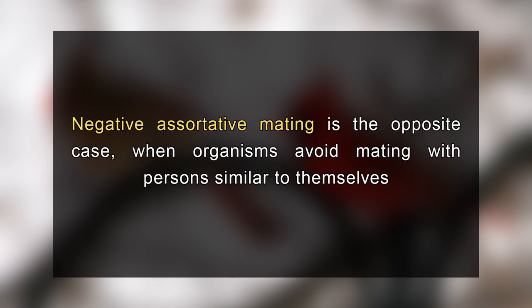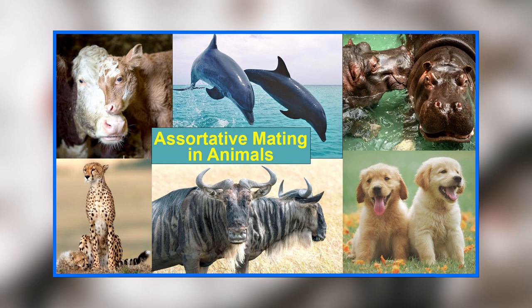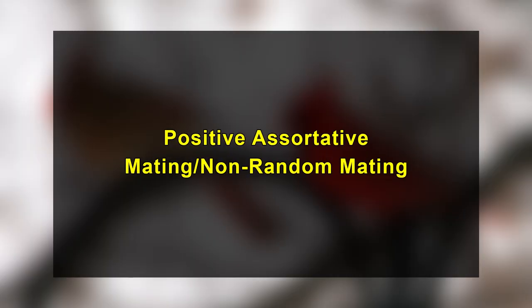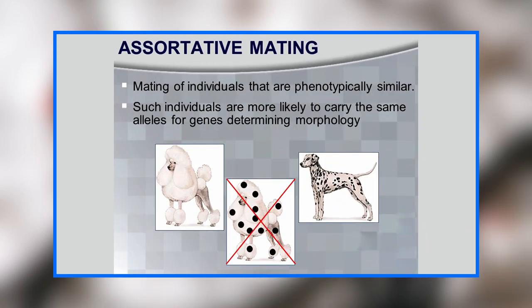Negative assortative mating is the opposite case, when organisms avoid mating with persons similar to themselves. Assortative mating also occurs in non-human animal populations; indeed, phenotypic similarity is thought to underlie mate selection in a variety of species. Positive assortative mating or homogamy is a mating pattern and a form of sexual selection in which individuals or organisms with similar phenotypes or genotypes mate with one another more frequently than would be expected under a random mating pattern.